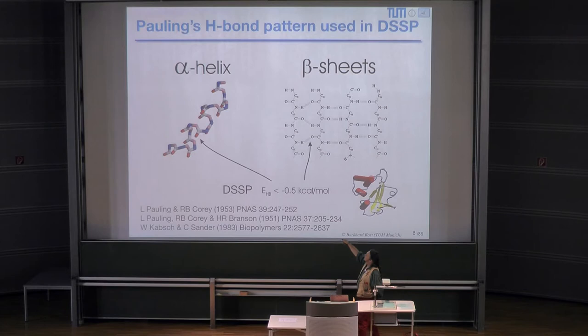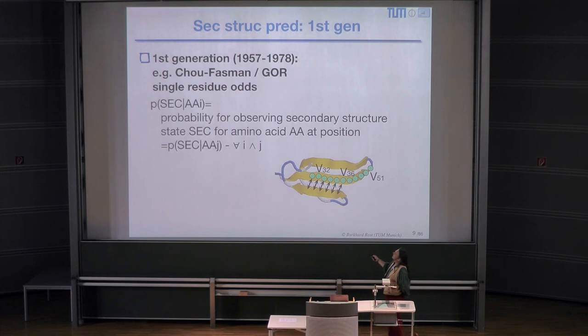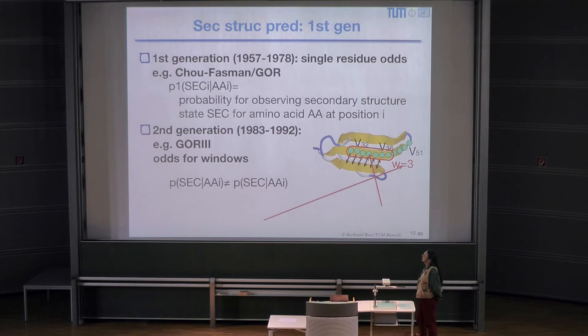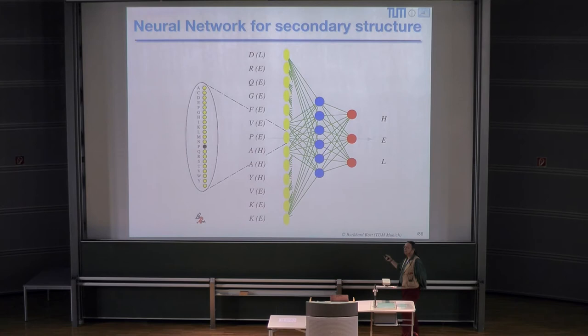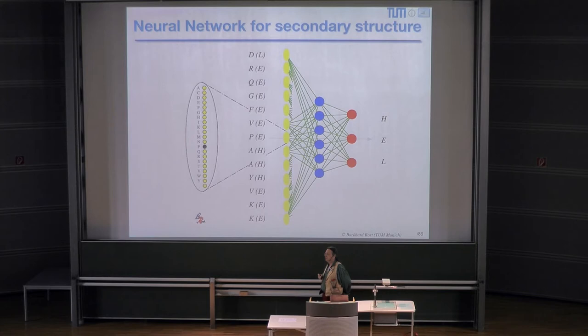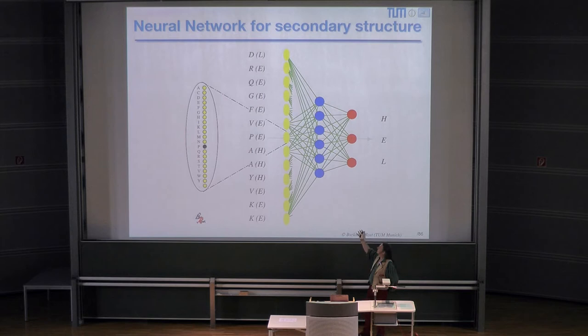Secondary structure is stabilized by hydrogen bonds — helix, beta-strand — same thing, backbone hydrogen bonds. The first generation of methods simply used single residue probabilities and got relatively low performance. The second used context probability, but we did not get much over 60% performance, beta-strand was predicted very badly, and the segments were too short. Machine learning devices — neural networks — were used. Nearest neighbor is another example that is very good; k-mer nearest neighbor tools are very good, and become better over time as the database grows.